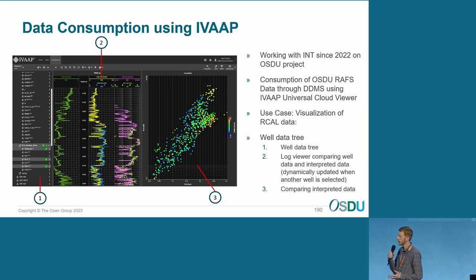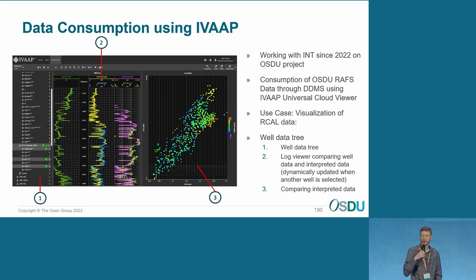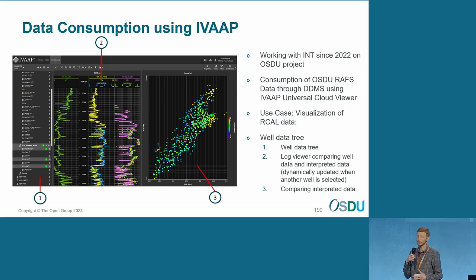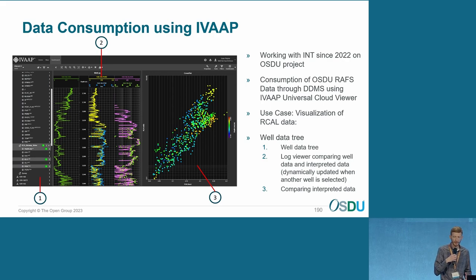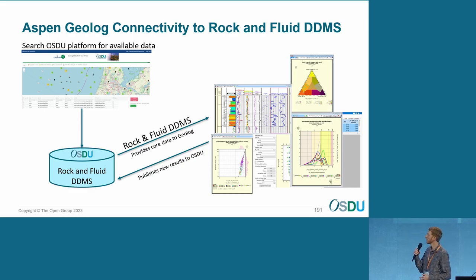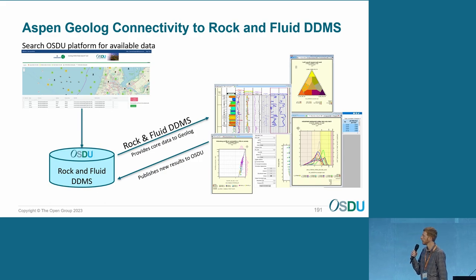It was also mentioned that you need to visualize the data. Here we have routine core analysis data plotted on log tracks and on a cross plot, working in IVAP. We want to make sure the first thing we can do is visualize it. If you go to an SME and say there's a problem with your data, they're going to say show it to me. Once we load it into OSDU, we need to be able to look at it and see what's there. And finally, we need to make business decisions with the data, so we'll be collaborating with Aspen Geolog to implement the rock and fluid DDMS the same way they've implemented the other DDMSs.